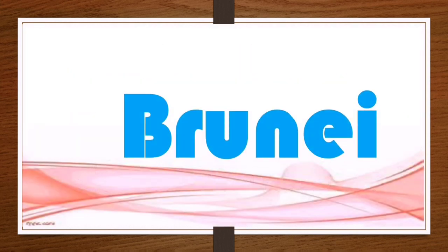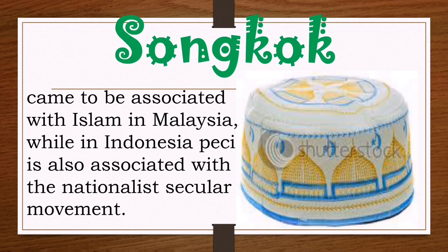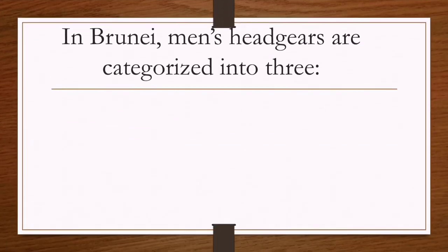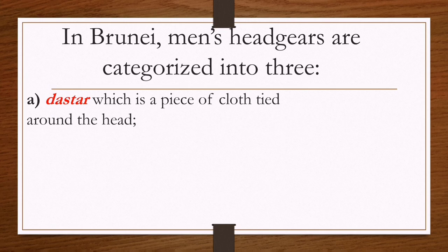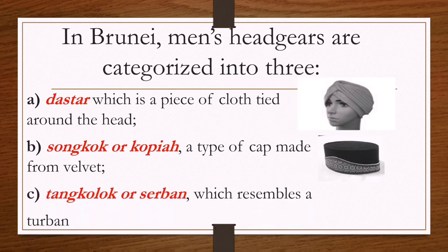Last is Brunei. Brunei has their songkok. The songkok is associated with Islam in Malaysia, while in Indonesia the peci is associated with the national secular movement. In Brunei, men's head gears are categorized into three types: the dastar, a piece of cloth tied around the head; the songkok or kopiah, a type of cap made from velvet; and the tangkolok or turban, which resembles a turban.